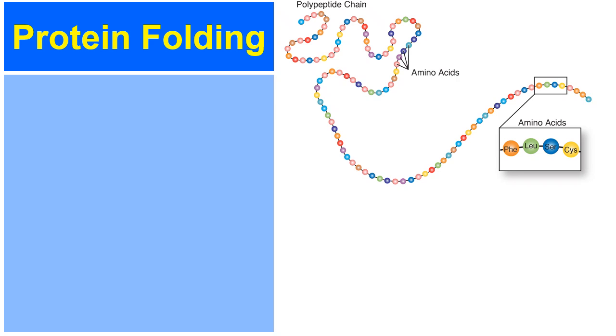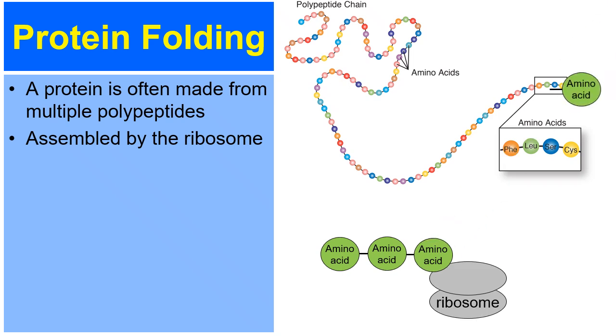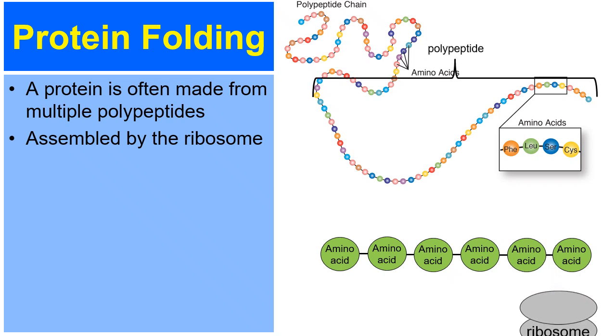Now, as we said earlier, proteins go through a folding process. A protein is often made from multiple polypeptides. Here's a, in the picture, again, a polypeptide is a long chain of amino acids. And as we said also earlier that they're assembled, polypeptides are assembled by the ribosome. The ribosome gathers one amino acid and joins it with another, and that's through dehydration synthesis. And so here's the ribosome, again, gathering amino acids one at a time. And through dehydration synthesis, the amino acids bond with each other to make a polypeptide.